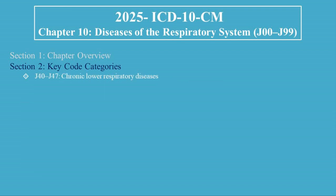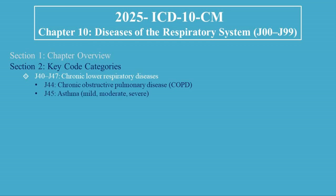J40 to J47 covers Chronic Lower Respiratory Diseases. J44 is Chronic Obstructive Pulmonary Disease (COPD). J45 covers Asthma in mild, moderate, and severe classifications. Example: J45.40, Moderate Persistent Asthma, Uncomplicated.